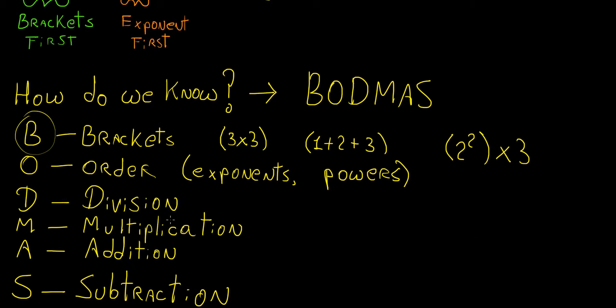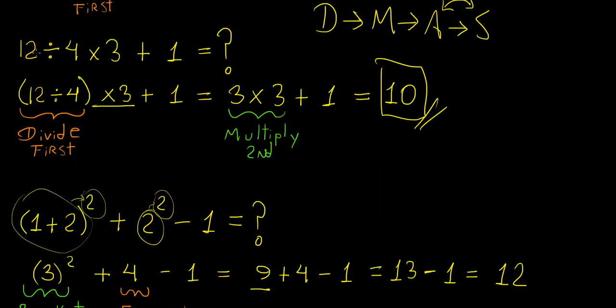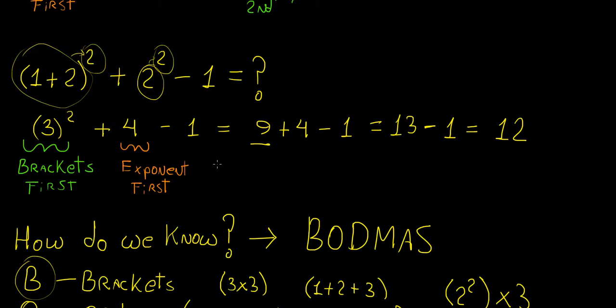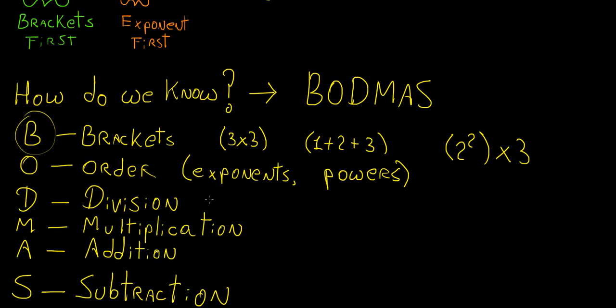Then the third one is going to be division. So if you have something like in this case, where you had the 12 divided by 4 times 3, division comes before multiplication. Then multiplication is the fourth operation, and then that is followed by addition and subtraction.